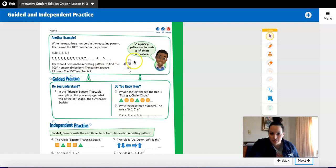So remember this number here is going to be how many groups of the pattern you have. So we have 25 groups of 4 numbers.